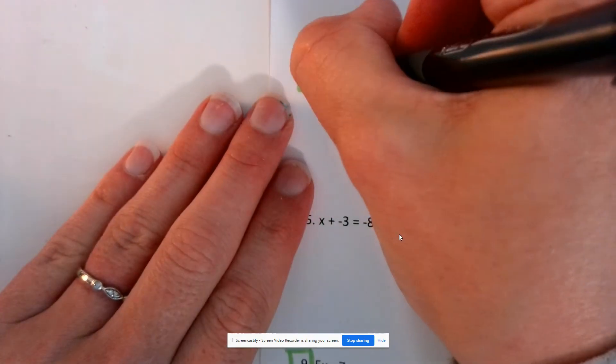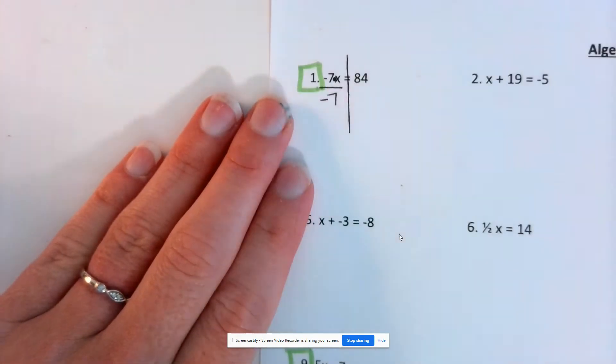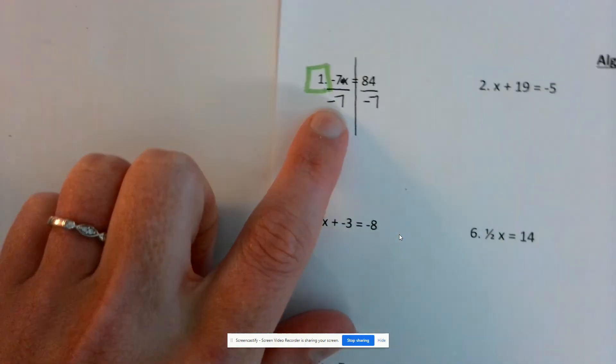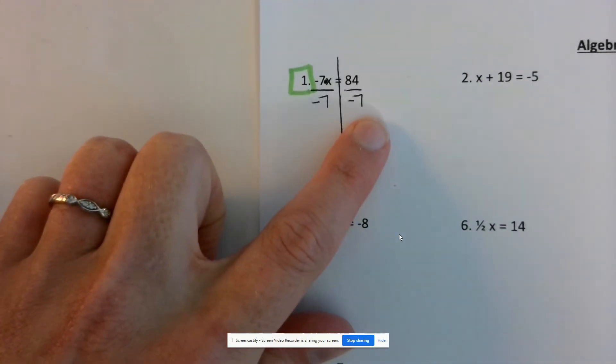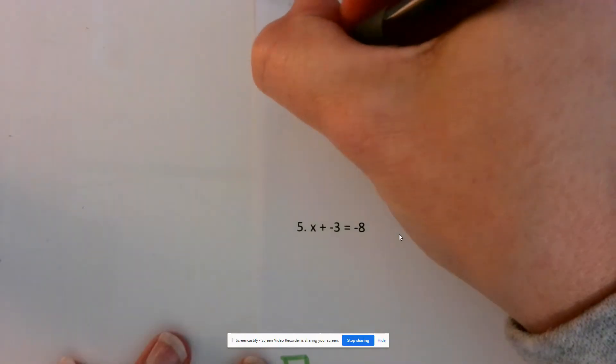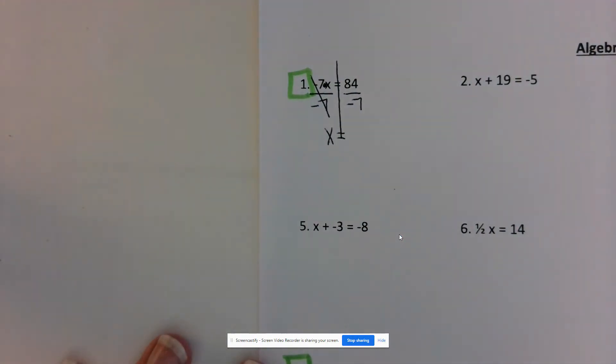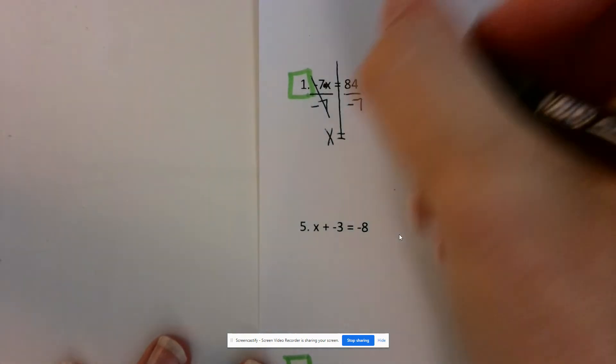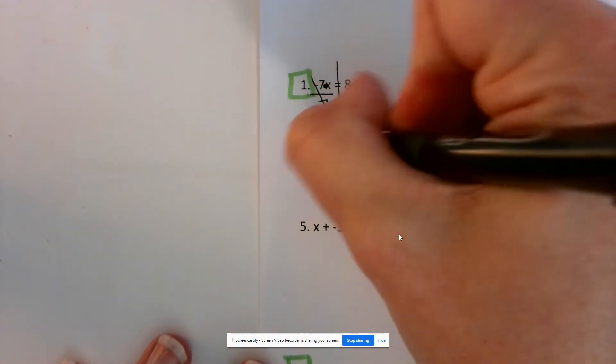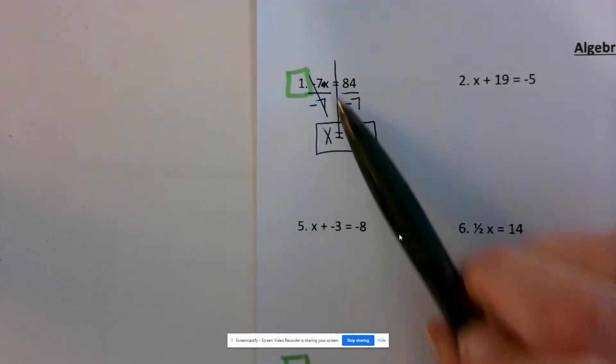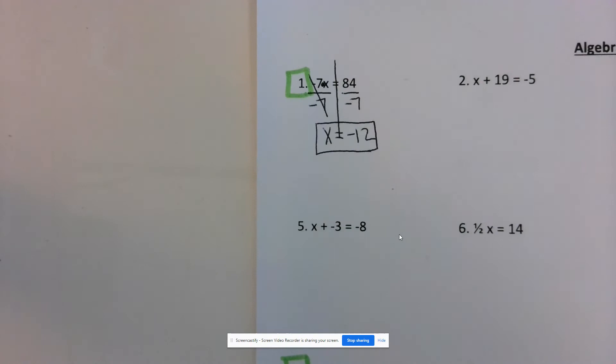So I'm going to divide both sides by negative 7. Remember, whatever you do to one side of your equation, you need to do the same thing to your other side. 84 divided by negative 7 gives me negative 12. And remember, you can always go back, take your value for x, and plug it back in to see if it makes the equation true.